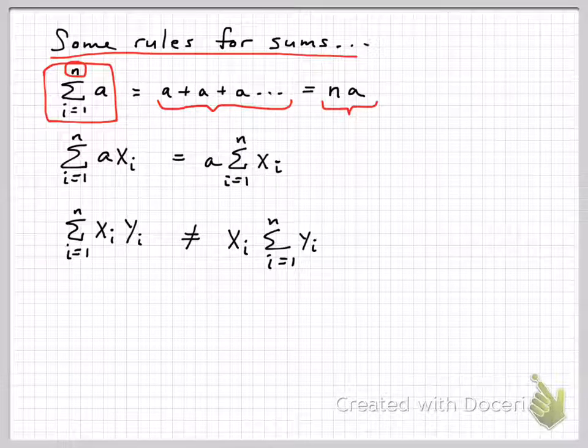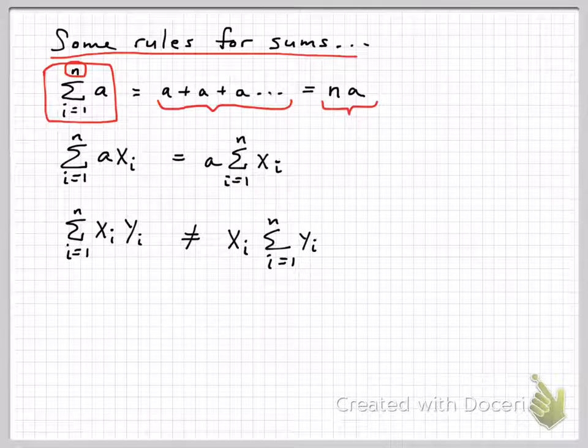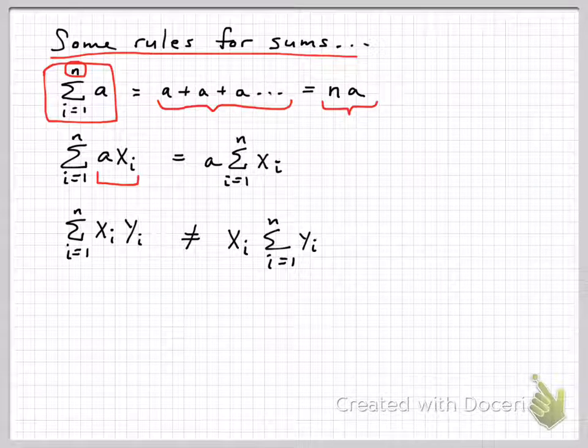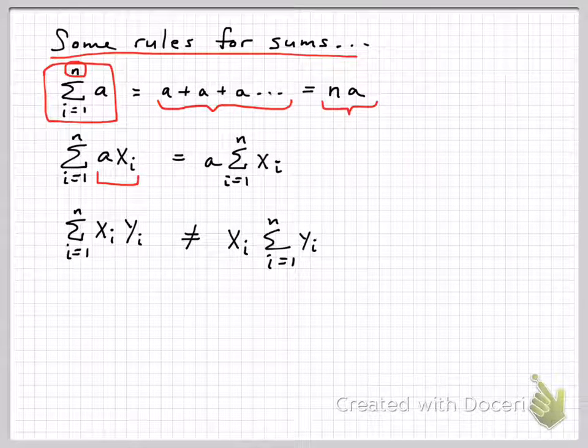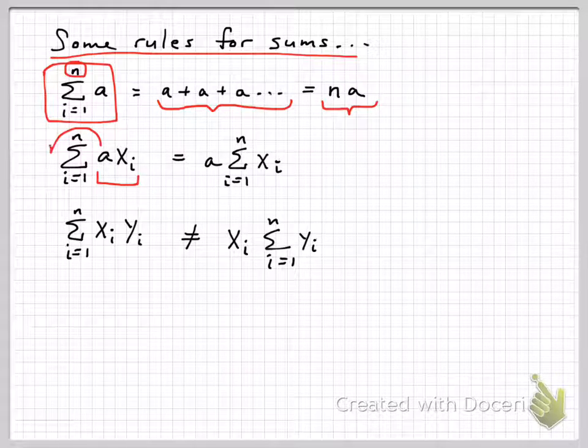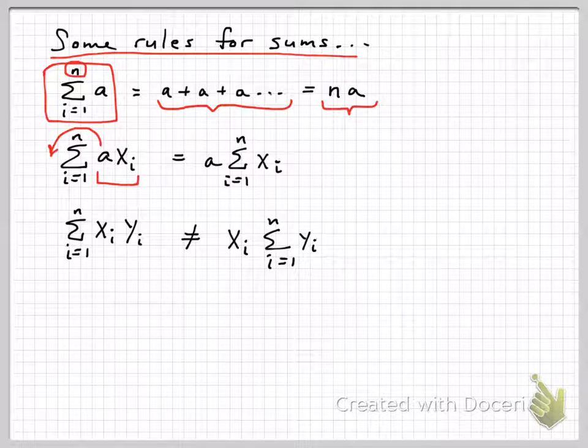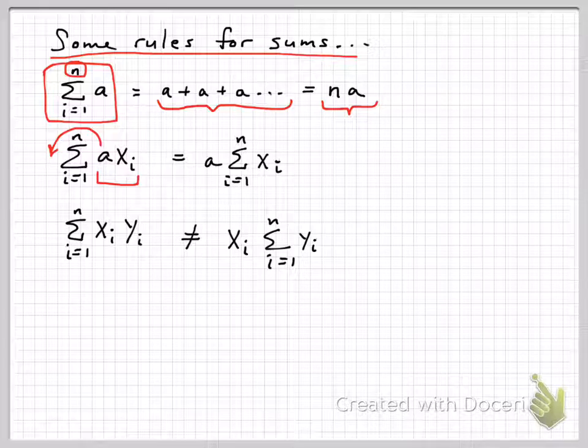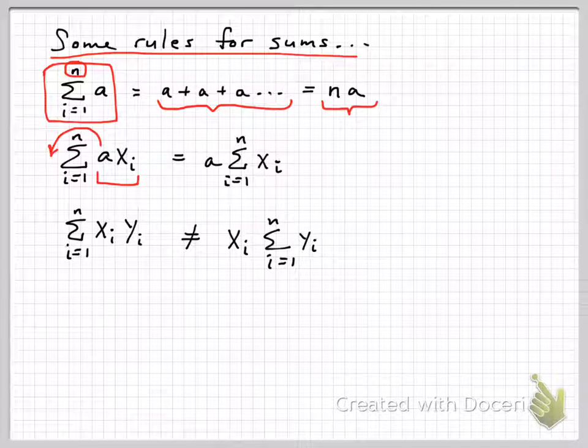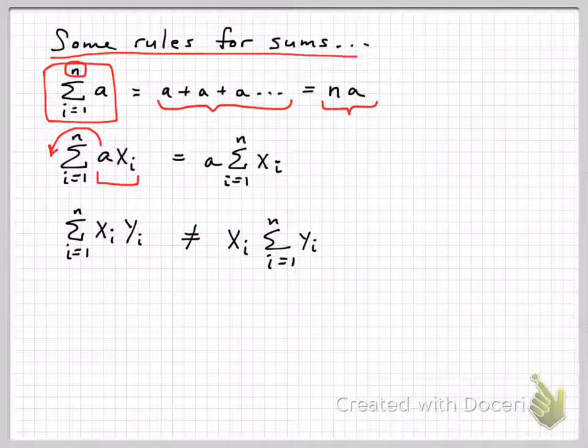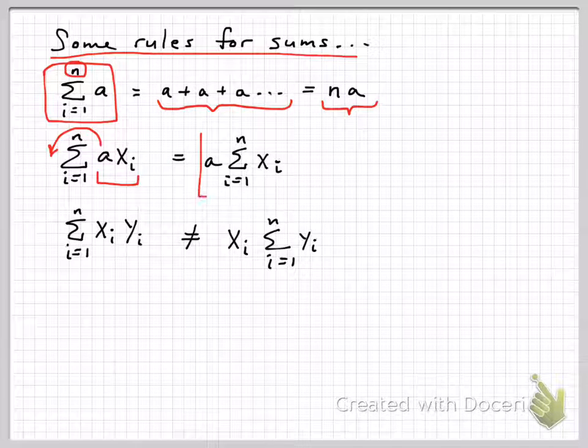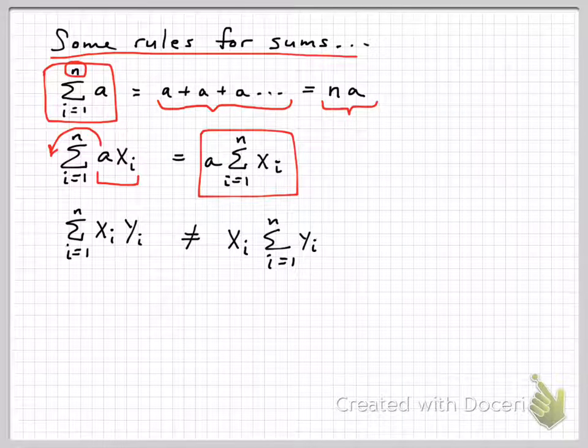Now the distributive rule applies. So if you have under the sum here, we have a times xi and a is a constant. We can factor that a out and bring it out here. And again, if you were to write this out, you'd have a long string of a times x1 plus a times x2 plus a times x3. And you could factor all those a's out because it's just a constant number, a parameter. And so we end up with this a times the sum of the x's.